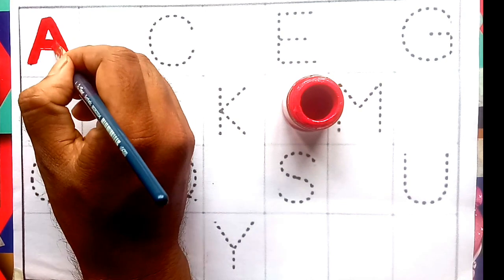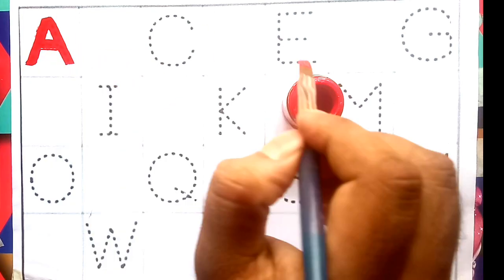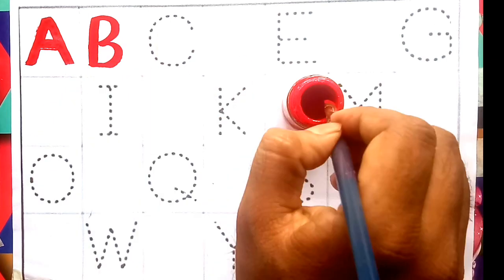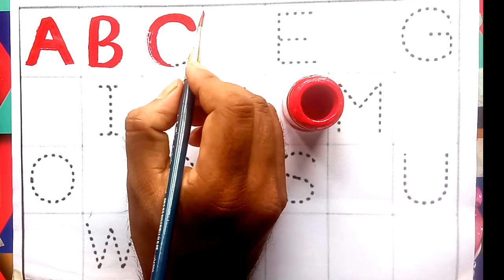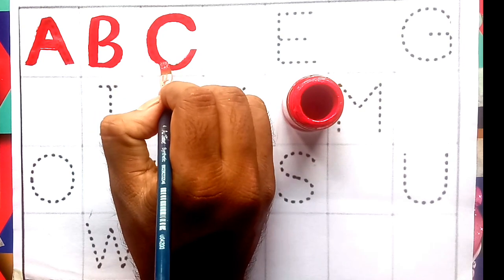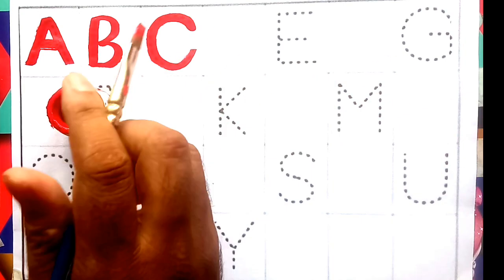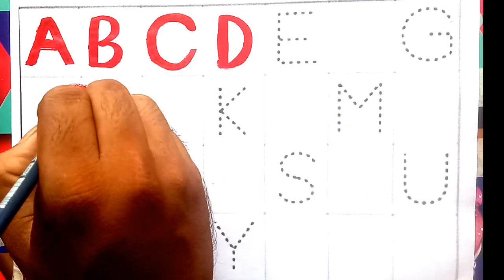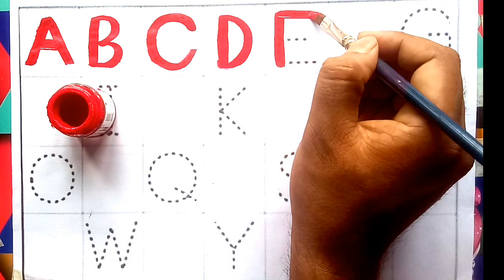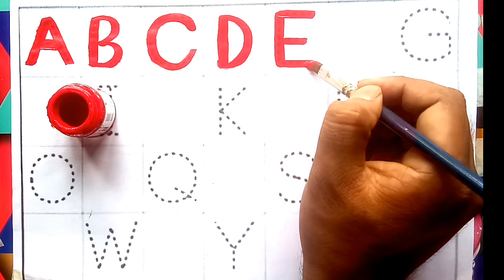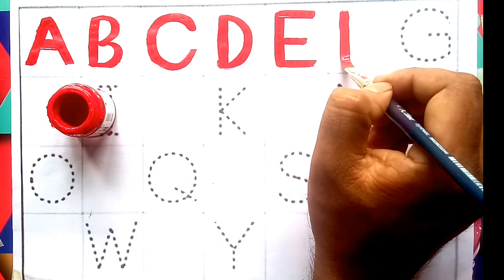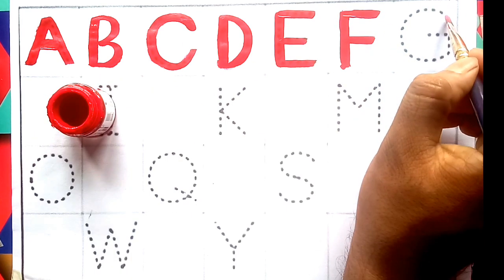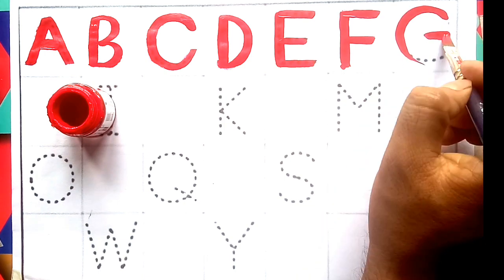A for aeroplane, B for ball, C for gate, D for dog, E for egg, F for fish, G for goat.